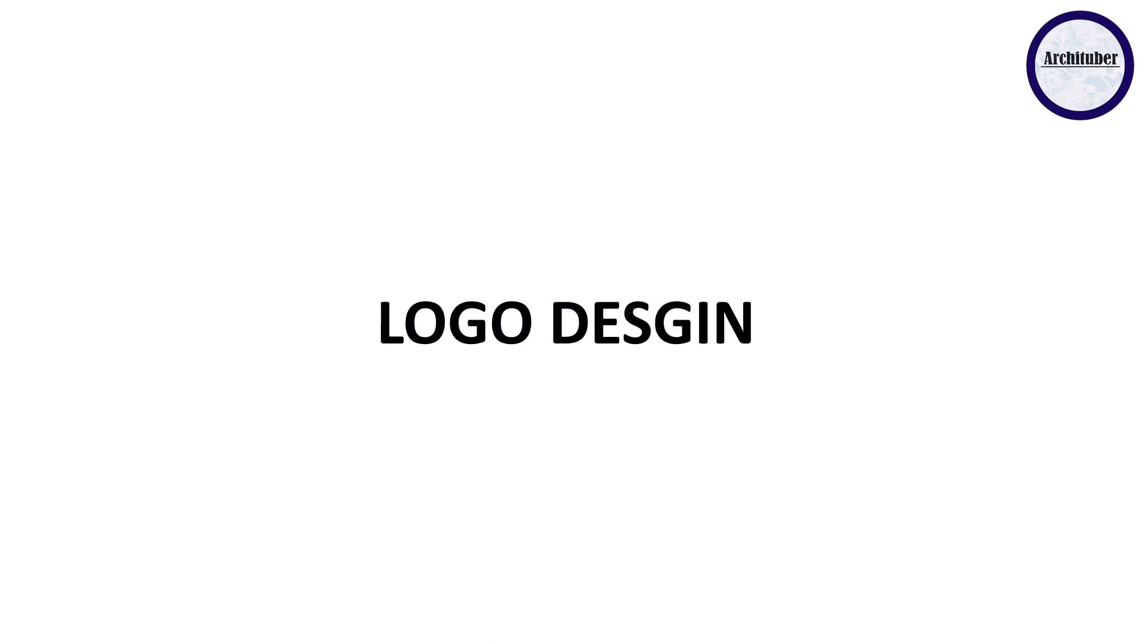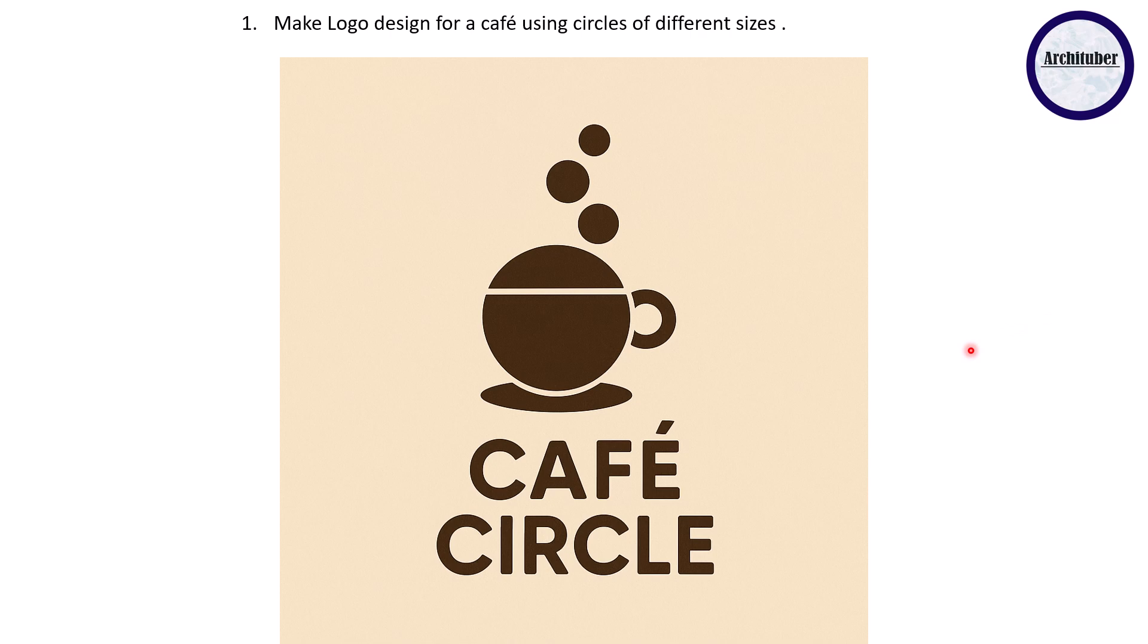Then discussing logo designs. The first question is make logo design for a cafe using circles of different sizes. For the cafe you can show a small cup using the circle. So they have divided this circle in two parts - even this is not a complete circle but this is used as a handle. Then this has been made as a saucer and this as bubbles. This might have a coffee or hot chocolate or something and the bubbles are going up. It is a very nice composition - I love this composition so much. You can try something like this in the logo design.